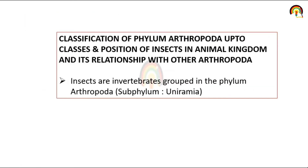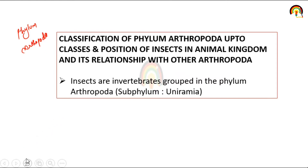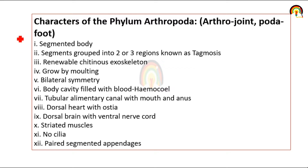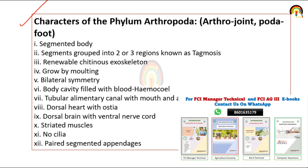So, classification of Phylum Arthropoda — we have seen in the previous lecture that most of the insects belong to Phylum Arthropoda. Arthropoda is made of two terms: 'arthro' which means joint, and 'poda' which means foot. So Arthropoda means joint foot.